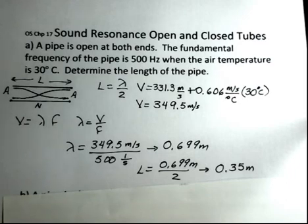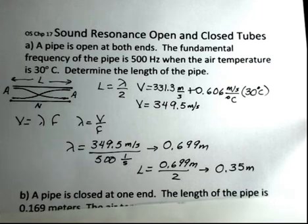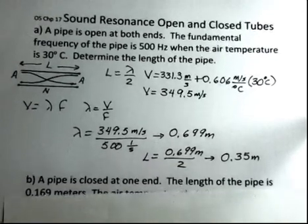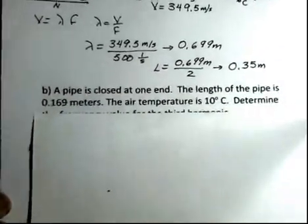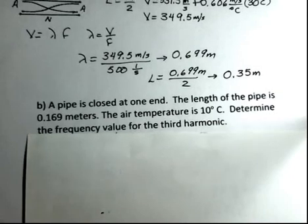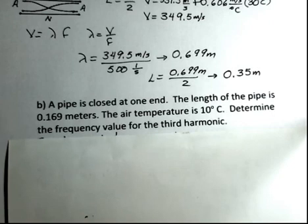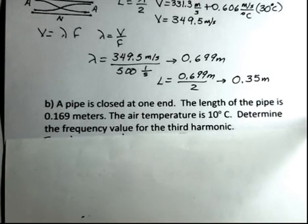Second problem, we have a pipe that's closed at one end. So open at one end, closed at one end. And the length of the pipe is 0.169 meters. The air temperature is 10 degrees Celsius. What's the frequency for the third harmonic?